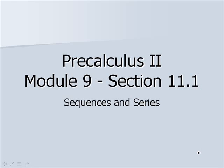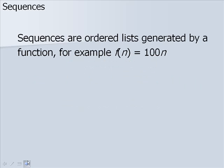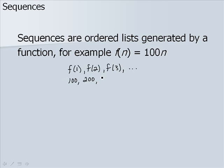Module 9, Section 11.1: Sequences and Series. Sequences are ordered lists generated by a function. For example, f of n equals 100n. To generate our ordered list, we start with f of 1, f of 2, f of 3, and so on. When we plug in 1, we get 100, then 200, then 300, and so on.